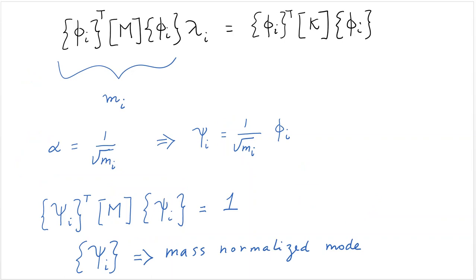The other important property, if we follow that, is that if we pick a certain kind of scaling, a special kind of scaling, in which we select alpha equals to one over the square root of mi, where mi is phi i transpose m phi i. In this case, both are the same, i and i. So this is not zero, this will be some number. We call that number mi, and we scale the mode by one over the square root of that number.